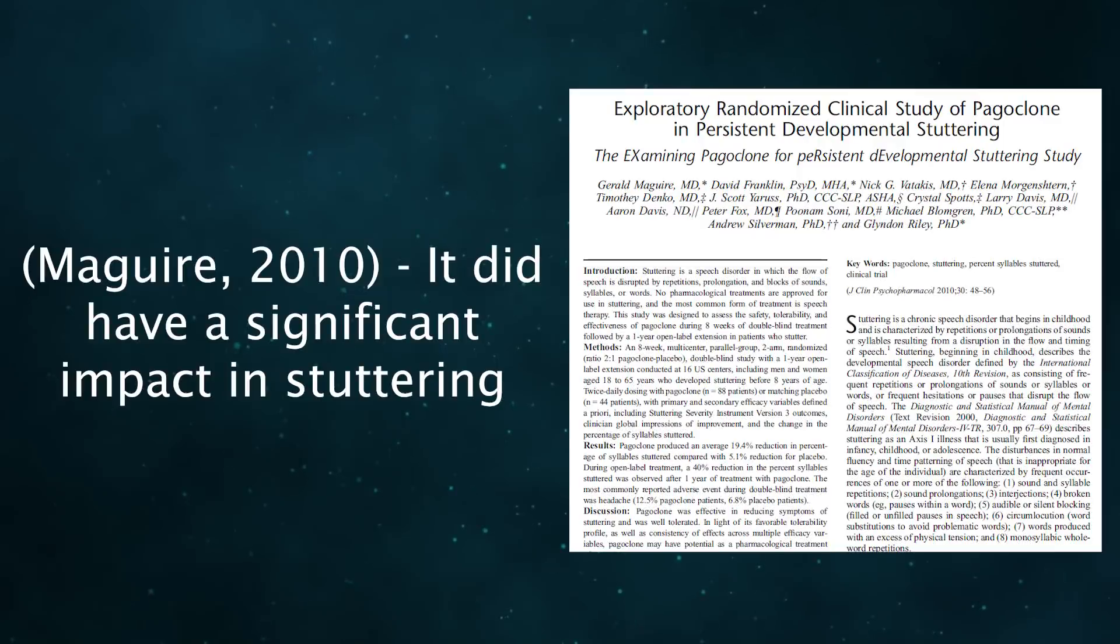A controlled trial of 132 patients found pagoclone did improve symptoms significantly more than placebo over the course of eight weeks, and benefits continued to exist for up to a year during an open-label extension period.